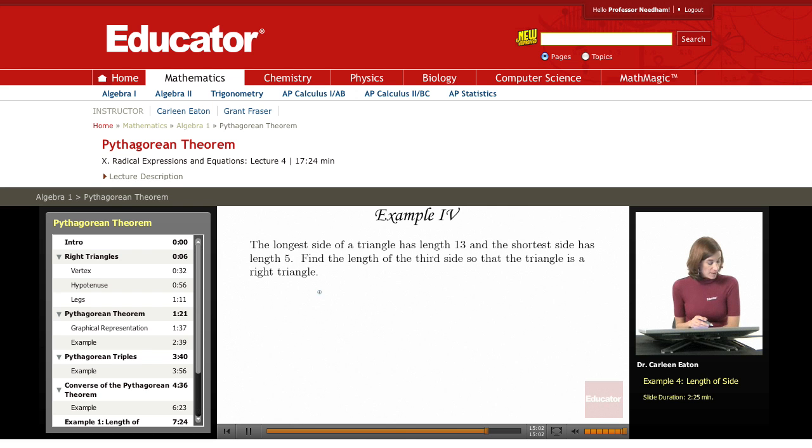All right, in this fourth example, we're given that the longest side of a triangle has a length of 13, and the shortest side has a length of 5. Find the length of the third side so that the triangle is a right triangle.